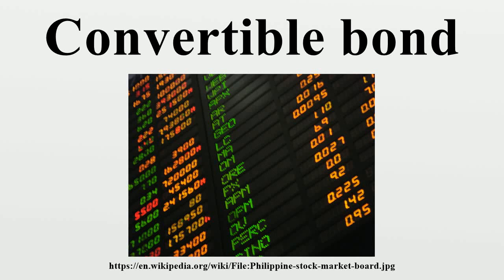In finance, a convertible bond, convertible note, or convertible debt is a type of bond that the holder can convert into a specified number of shares of common stock in the issuing company, or cash of equal value. It is a hybrid security with debt and equity-like features. It originated in the mid-19th century and was used by early speculators such as Jacob Little and Daniel Drew to counter market cornering. Convertible bonds are most often issued by companies with a low credit rating and high growth potential, to compensate for having additional value through the option to convert the bond to stock.